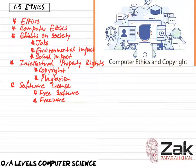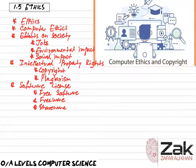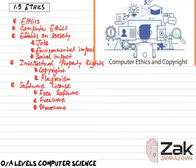Shareware is software that is initially distributed free of charge but may later require payment to unlock or keep functionality. Allowing users to try your software in this way creates an interest in your program and allows people to try before they buy. So if you download a software and it is available for a 30-day trial, it means that it is shareware.